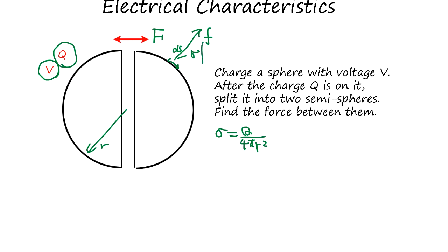We take this direction, so it involves cosine. The electrical field E generated by this is σ over ε₀, so it's like Q over 4πε₀r².